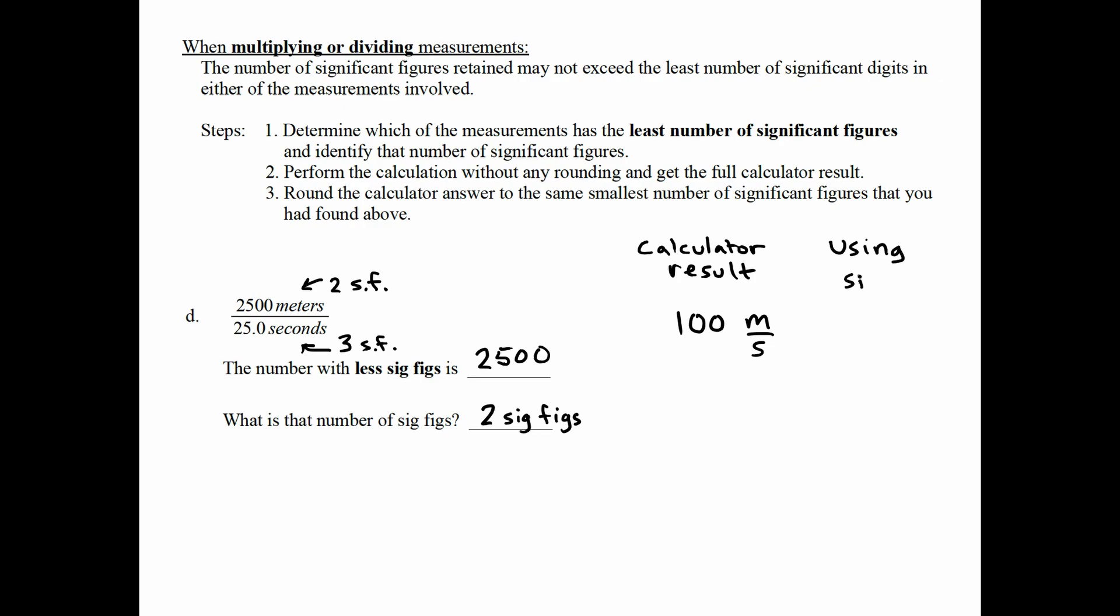But, uh-oh, there's a problem. Our calculator result only expresses one sig fig. But we need to express two. There is actually a clever way to express two sig figs in this situation. What we'd have to do is use scientific notation. 100 is 1 times 10 to the 2. But in order to express two sig figs, I have to make it 1.0 times 10 to the 2. Now it has two sig figs.